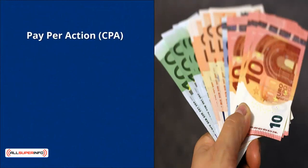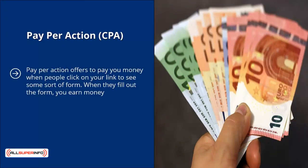Pay-per-action, CPA. Pay-per-action offers pay you money when people click on your link to see some sort of form. When they fill out the form, you earn money. CPA involves less friction to the user. Often times, people just need to enter their email address for you to make 20 cents to up to a dollar.